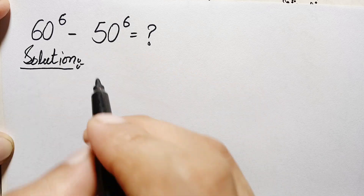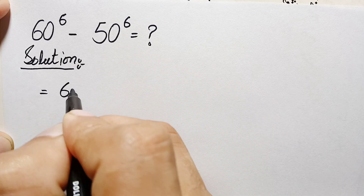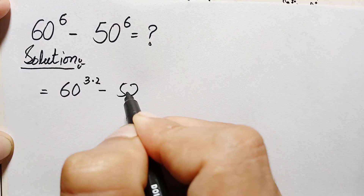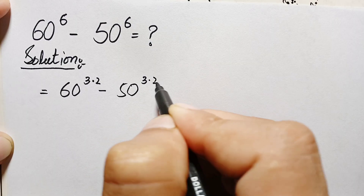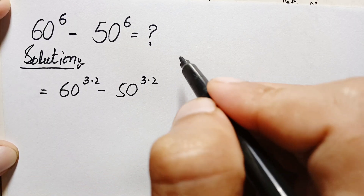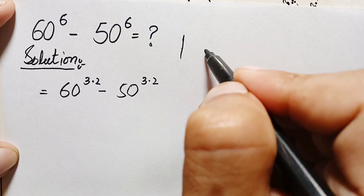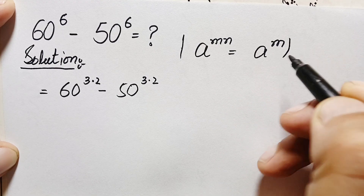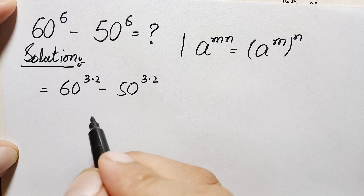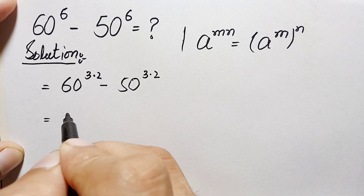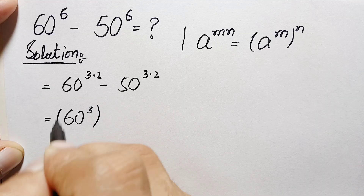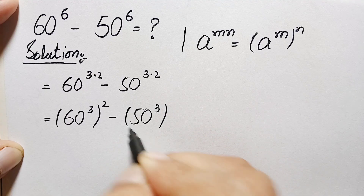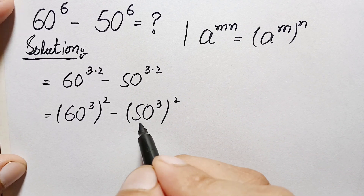First of all, here we rewrite the exponents: 60 raised to power 6, where 6 can be written as 3 times 2, minus 50 raised to power 6, where 6 can also be written as 3 times 2. We use the exponential identity a raised to power m×n equals (a raised to power m) raised to power n. Using this identity, this expression becomes 60 raised to power 3, whole squared, minus 50 raised to power 3, whole squared.